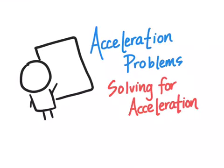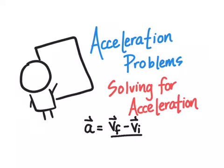In this video, we're going to walk through an example of solving for acceleration, and we're going to be using this formula. Acceleration equals final velocity minus initial velocity over time.